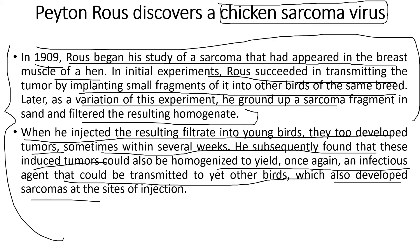Those other birds also developed sarcoma at the sites of infection. Sarcoma is the growth of cancer cells upon activation or injection of certain agents — in this case, the virus. Rous injected the filtrate of the virus homogenate obtained from the original chicken into young birds to check what would happen, and it resulted in the formation of tumors.